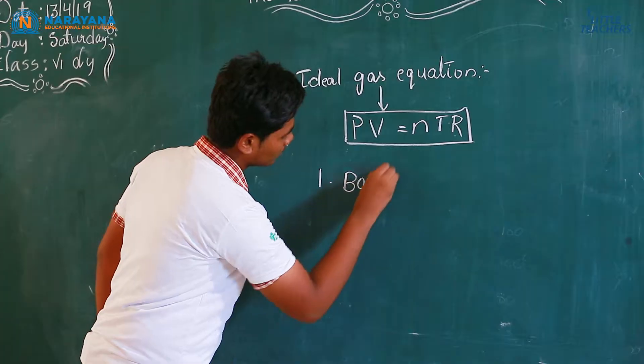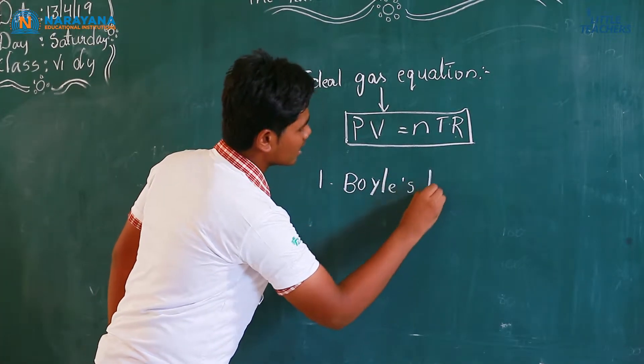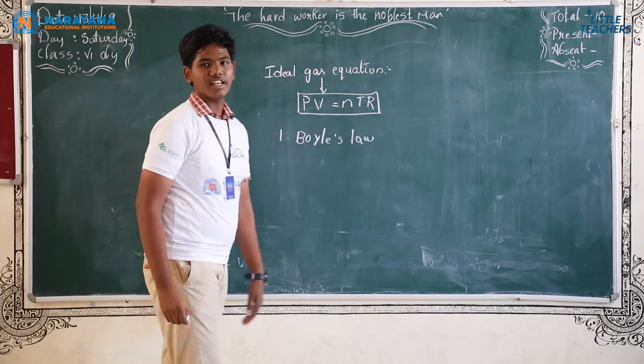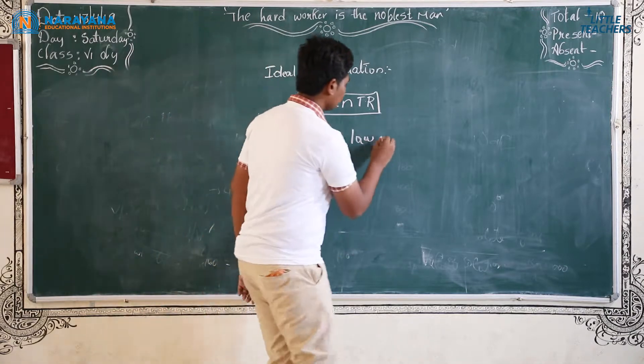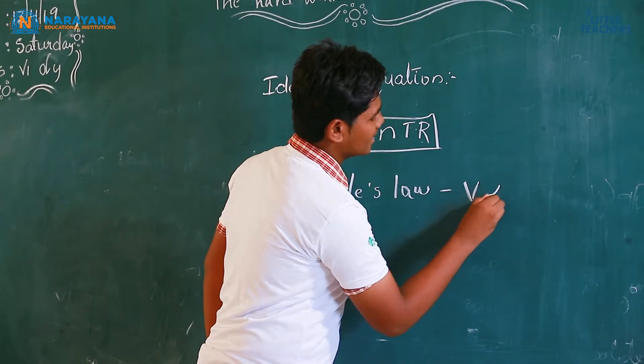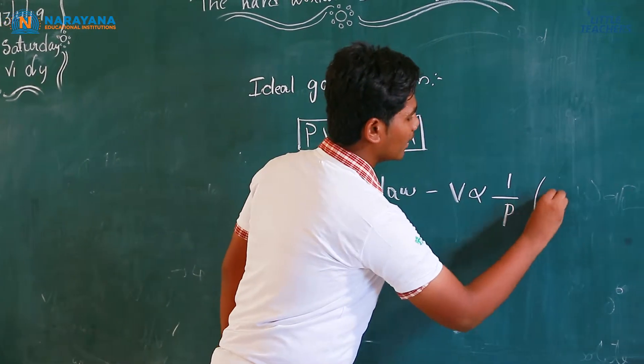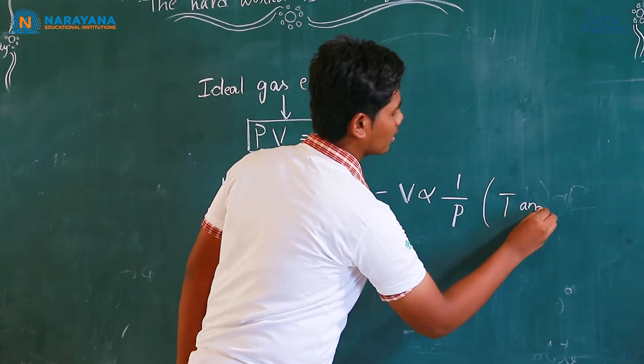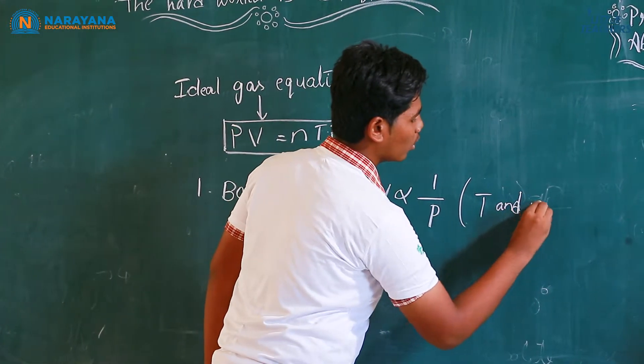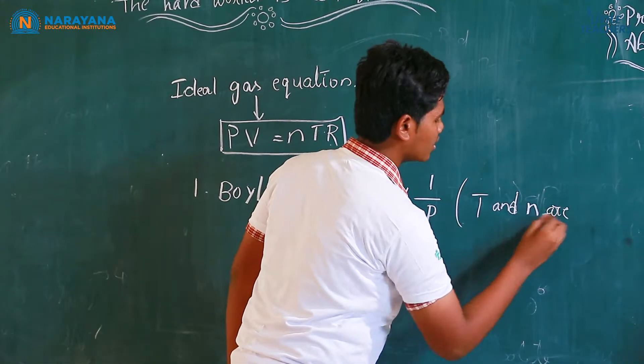Boyle's law. This law states that volume of a gas is inversely proportional to pressure where temperature and number of moles are constant.